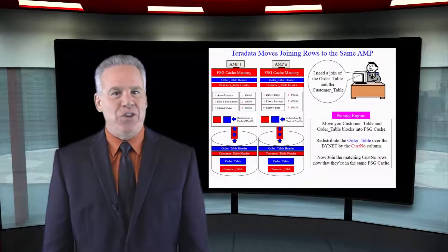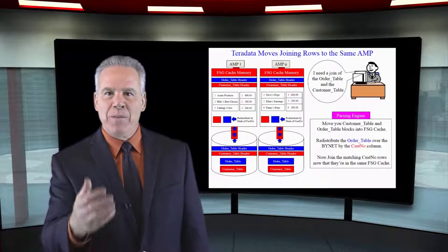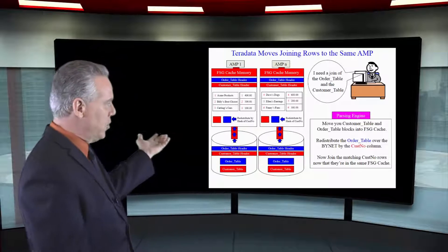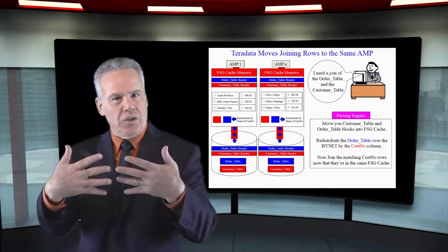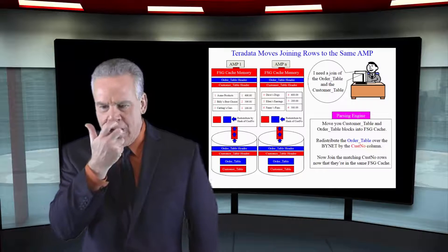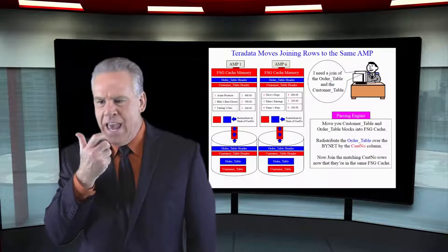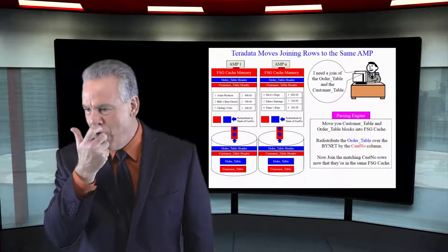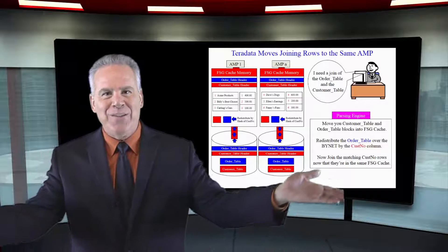Let's take a look at the joining of these two tables from the parsing engine's perspective. We're joining the customer table to the order table on Custno and Custno. Amps, I need you to bring your customer table and your order table blocks into your FSG cache. Move it. And they all go ahead and do that.